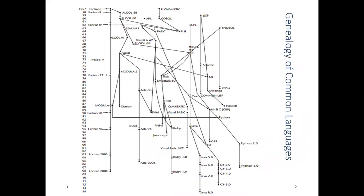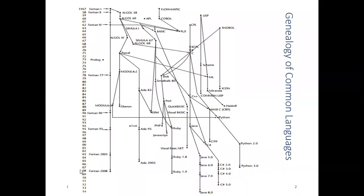As you can see in the graph, the FORTRAN programming language first started in 1957 with the development of FORTRAN I, and the last version we can track from the book is 2008. So overall, this programming language changed over almost 55 years.